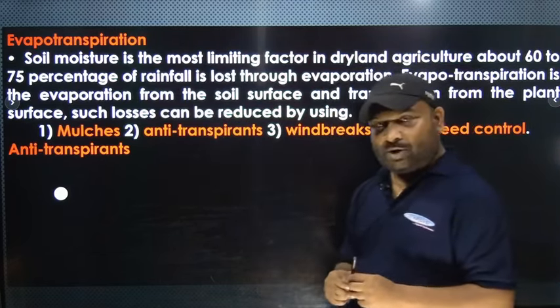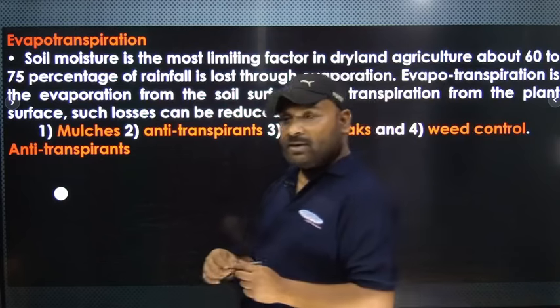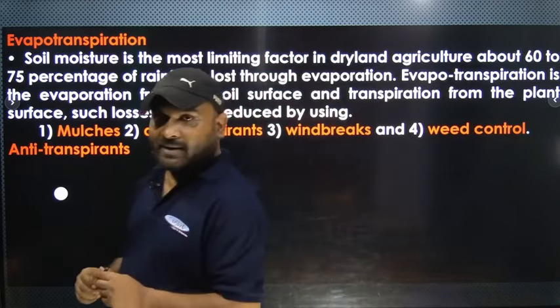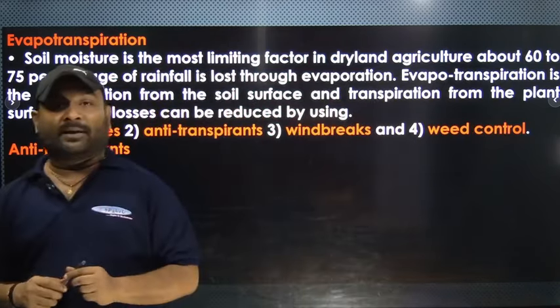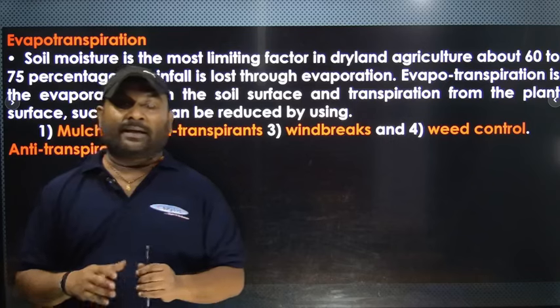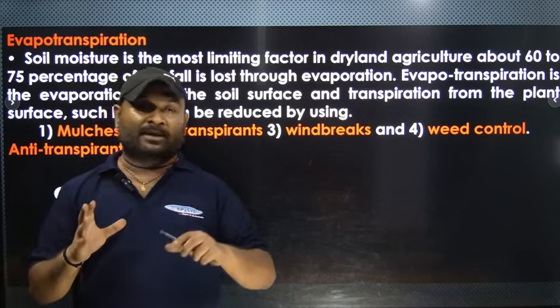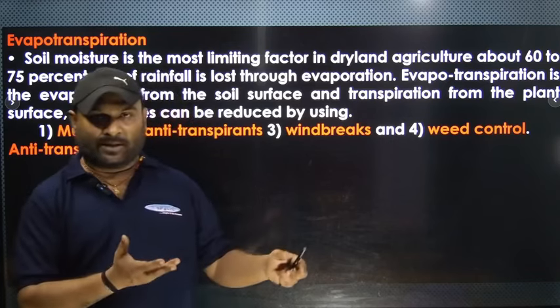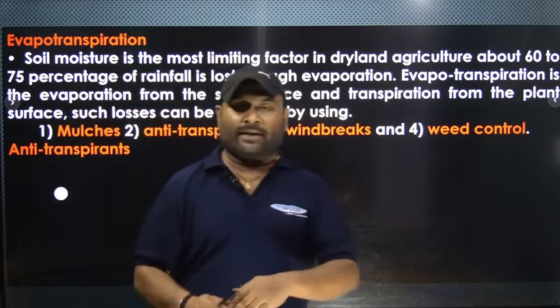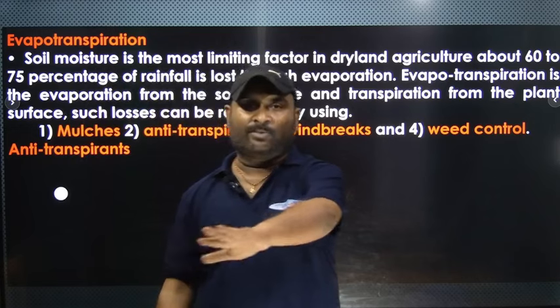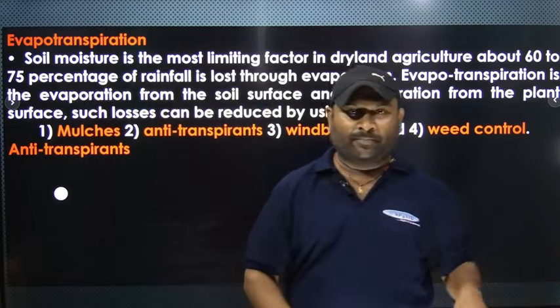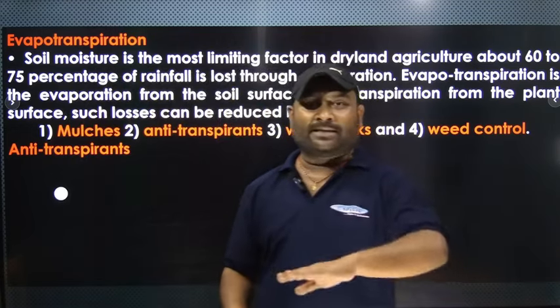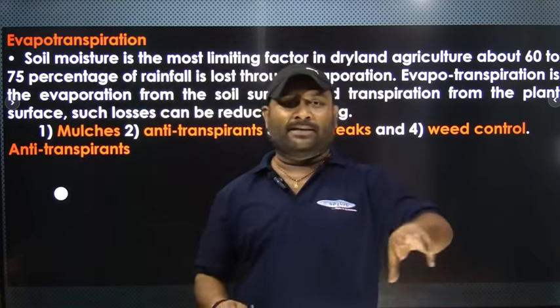There are many methods to reduce evapotranspiration. First, we use the stubbles of the previous crop and spread them in the field — this is called mulching. Mulching helps retain soil moisture near the surface. We can also use black polythene as mulch to conserve soil moisture.